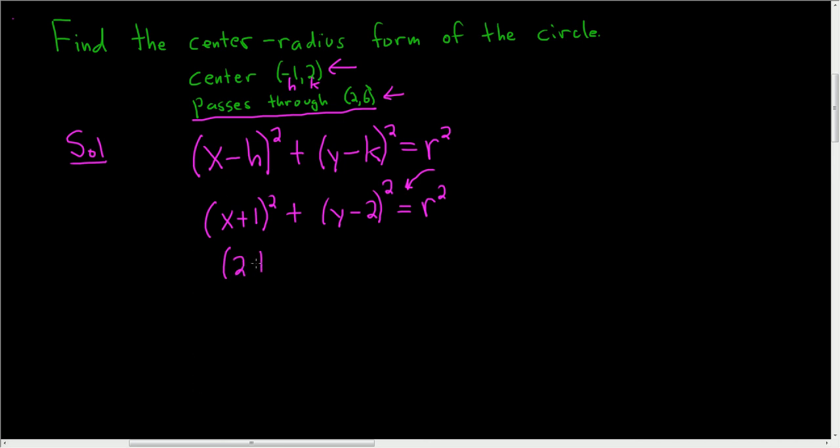So we get 2 plus 1 squared plus 6 minus 2 squared and this is equal to r squared. So 2 plus 1 is 3, so we get 3 squared, which is 9, plus 6 minus 2 is 4, so we get 4 squared, which is 16.